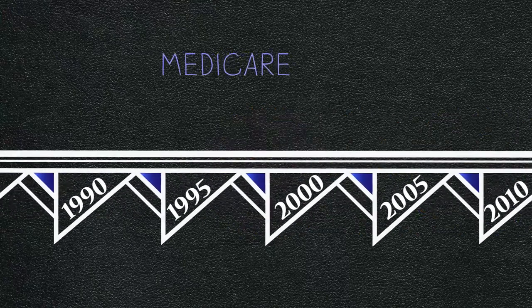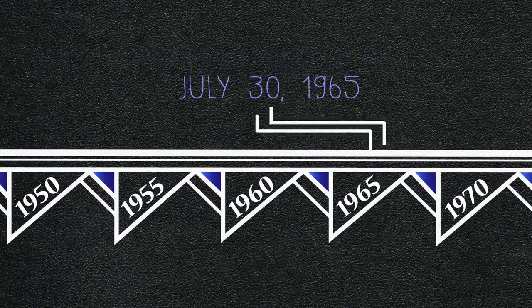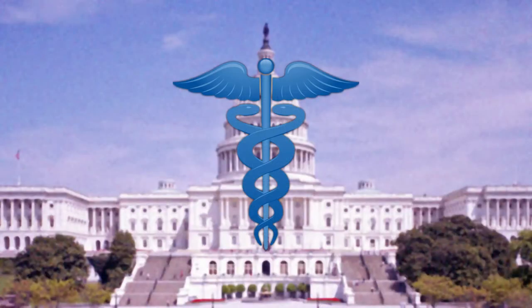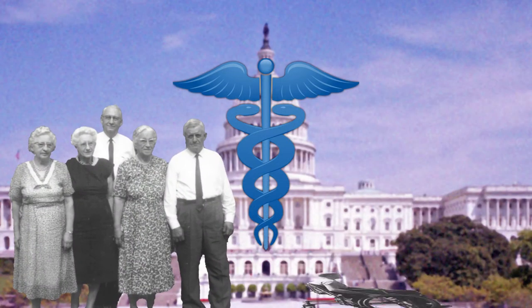President Lyndon Johnson signed the Medicare and Medicaid programs into law on July 30, 1965. Medicare is the federal health insurance program for people who are 65 and older and for people with disabilities.